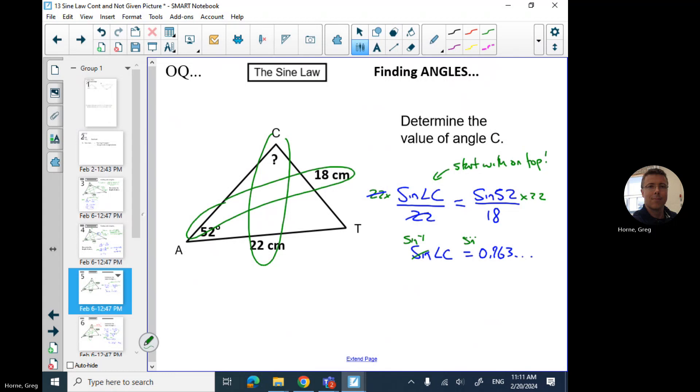So I get sine of C equals 0.963 dot dot dot. And of course I'm going to get rid of sine, sine inverse both sides, so that makes them go away, leaving the thing we want. C is sine inverse of that stuff, so sine inverse of the 0.963 dot dot dot equals 74.391. And I'm rounding reasonably, 74.4.